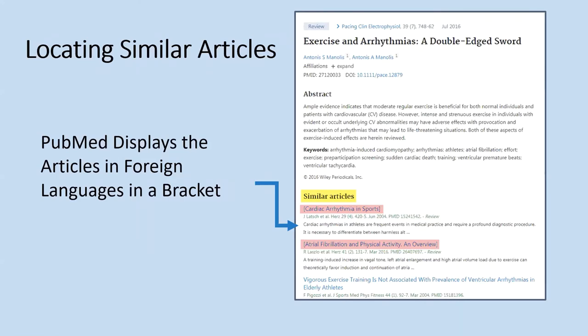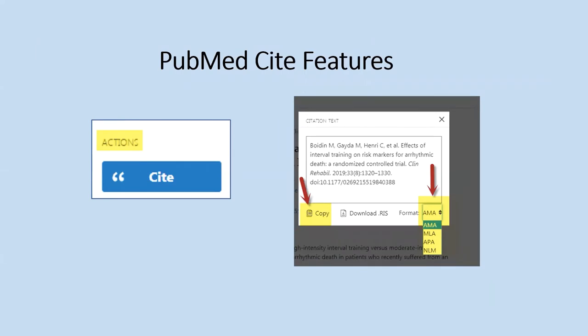Underneath the abstract, you'll find 'similar articles,' which helps you find more related content. Note: if you see brackets around an article title, that means the article is in a foreign language. The abstract may be in English, but the article itself is not, so don't request it on Interlibrary Loan unless you can translate it yourself. Also to the right of the citation is a 'Cite' button — click the dropdown to choose AMA, MLA, APA, or NLM format, then copy the citation or download it to your bibliographic manager program.